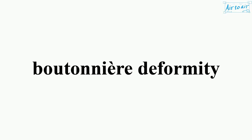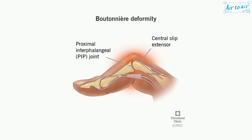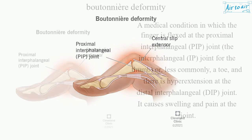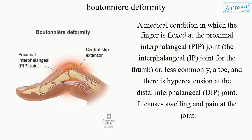Boutonnière Deformity. A medical condition in which the finger is flexed at the proximal interphalangeal (PIP) joint, the interphalangeal (IP) joint for the thumb, or less commonly a toe, and there is hyperextension at the distal interphalangeal (DIP) joint.